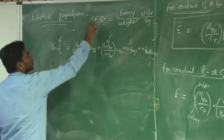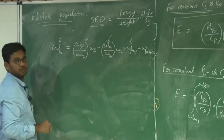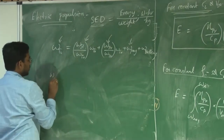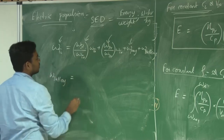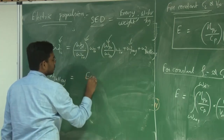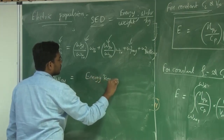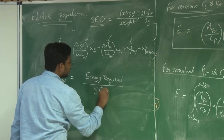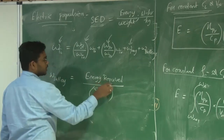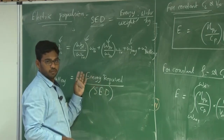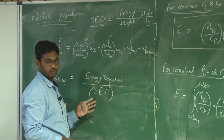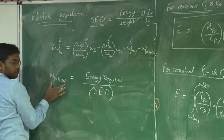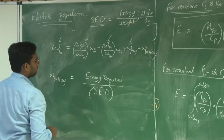If specific energy density is known, then battery weight = energy required / specific energy density (SED). Energy is in watt-hours, SED is in watt-hours per kg, so you get battery weight in kg.